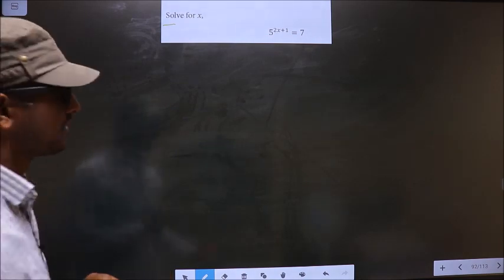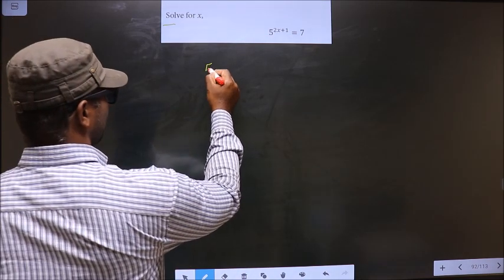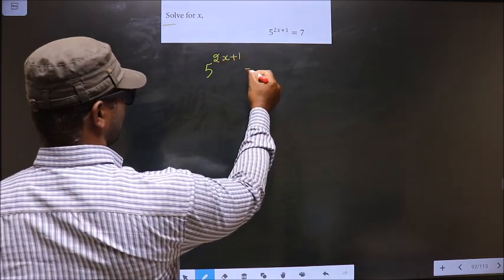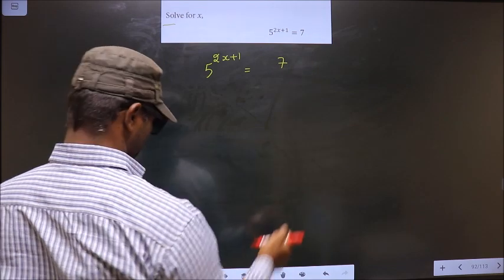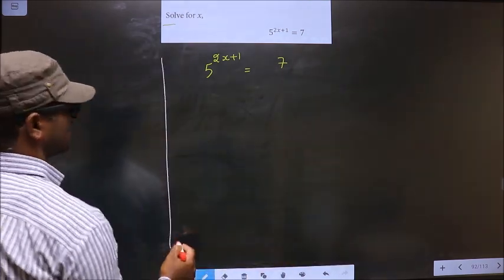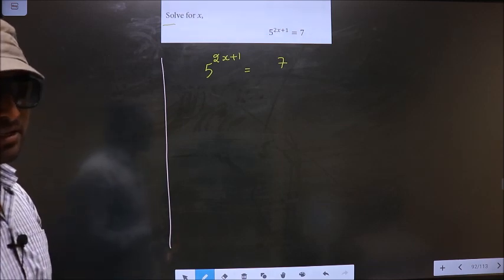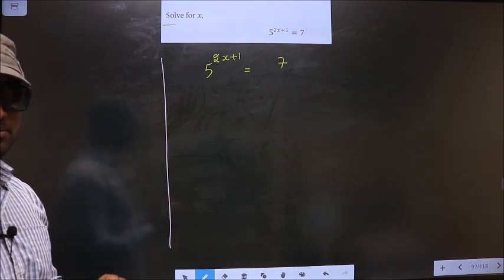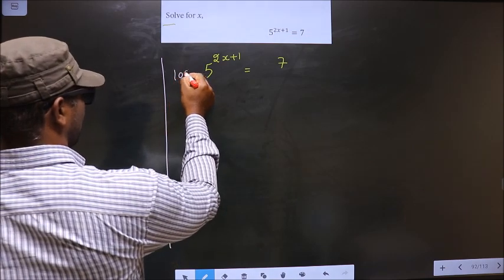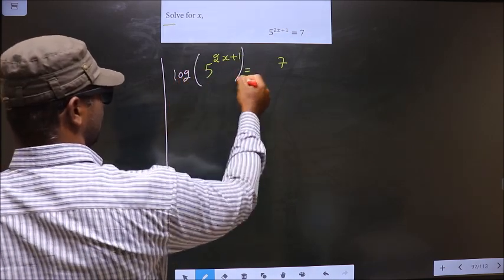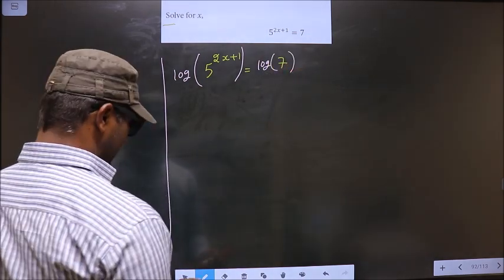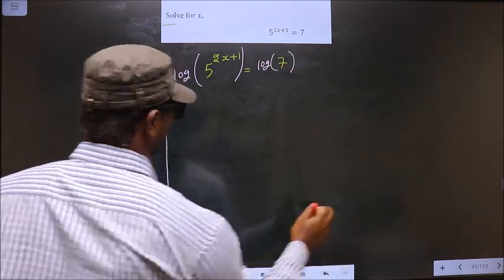The given equation is 5^(2x+1) = 7. Now, step 1: You take log on both sides. That is, log of this equal to log of this. This is our step 1.